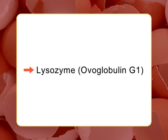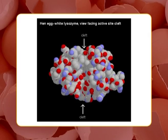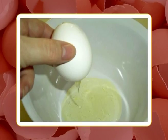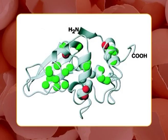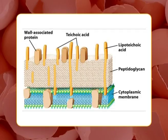The third protein is lysozyme, commonly known as ovoglobulin G1. It consists of a peptide chain with 129 amino acid residues and four disulfide bonds. Lysozyme is widely distributed and found not only in egg white but in animal tissues and secretions. This protein is an acetyl muramidase enzyme that hydrolyzes the cell walls composed of murein of gram-positive bacteria.